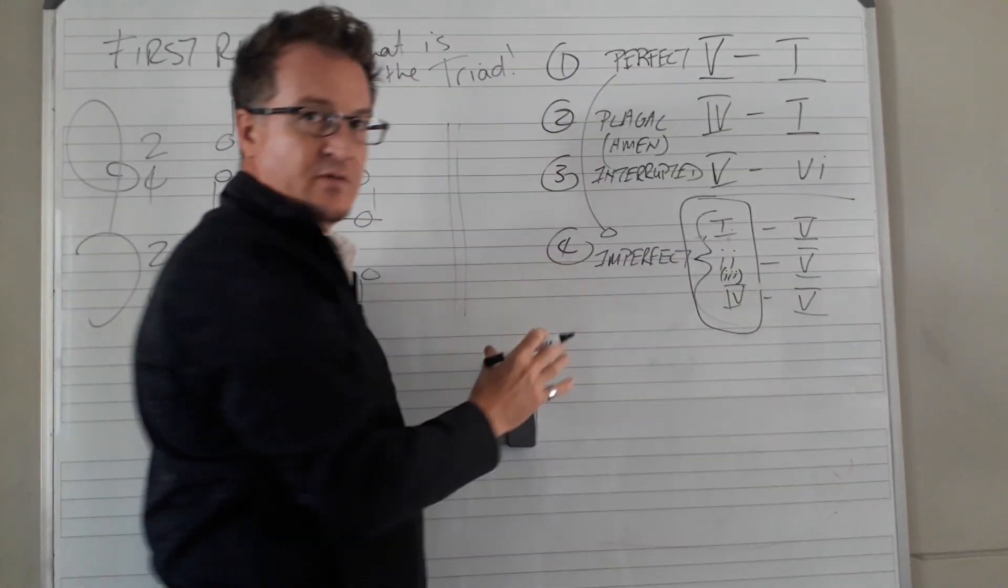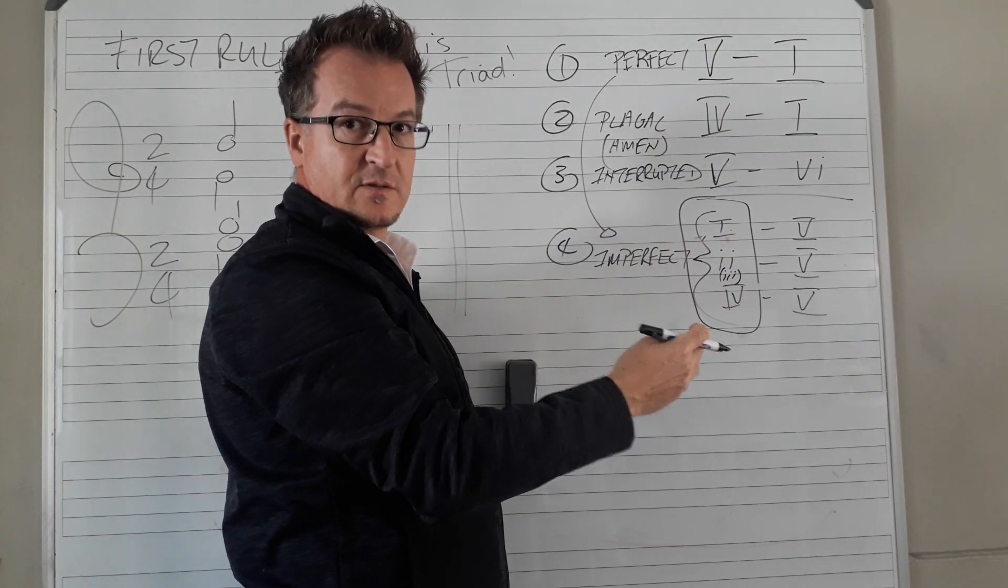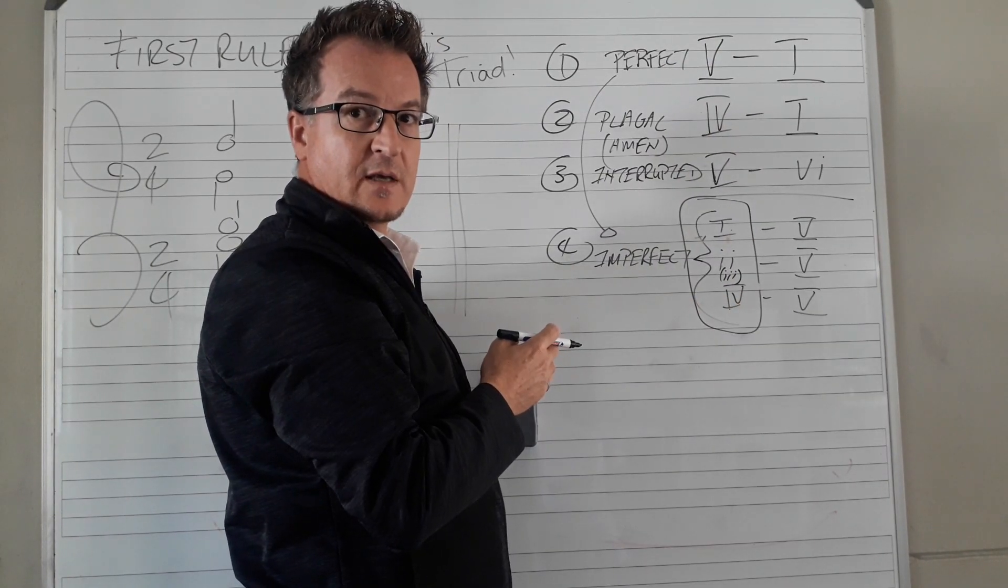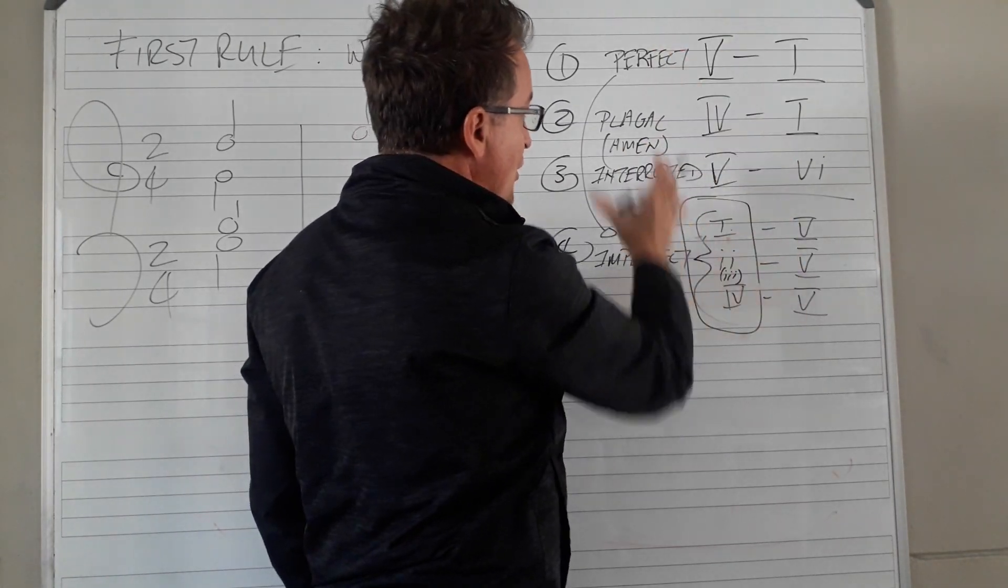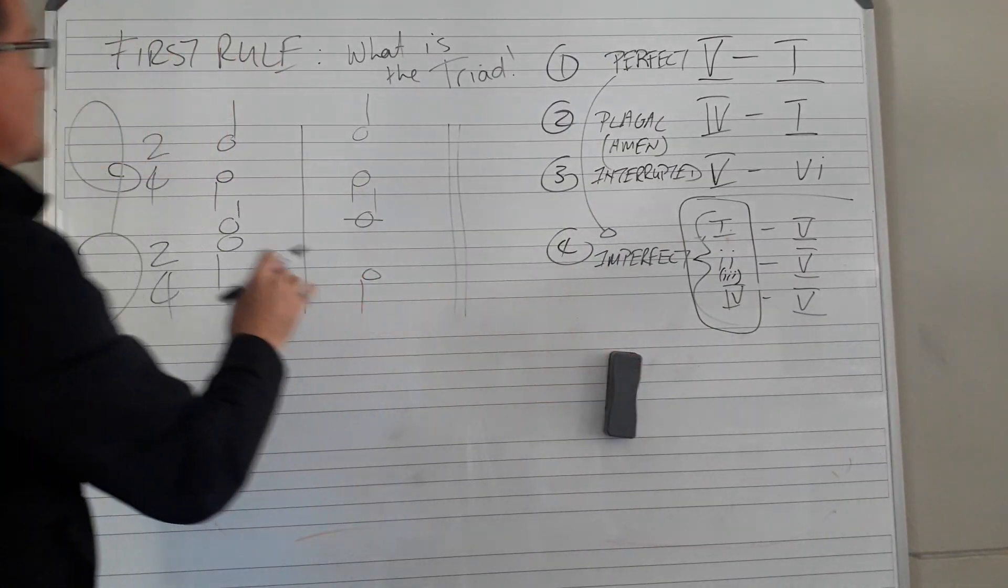Three's out. As long as you end up on the five chord, it's an imperfect. So the first thing you've got to do is memorize that. Do you think you guys know them? You've got to know the names, you've got to know the progressions.